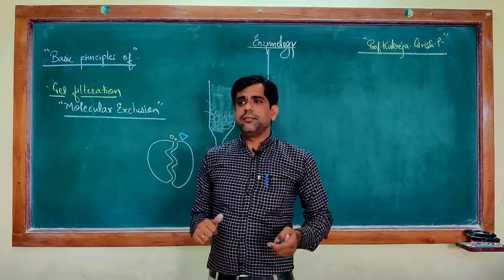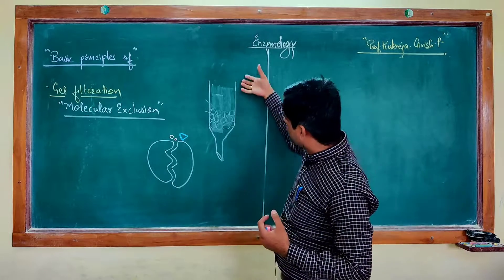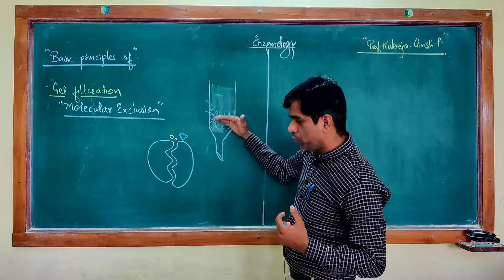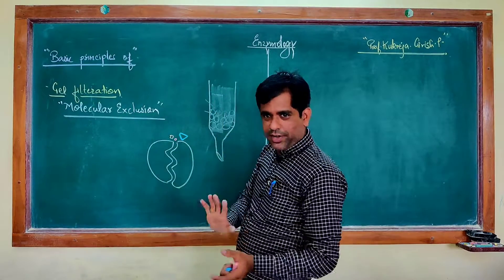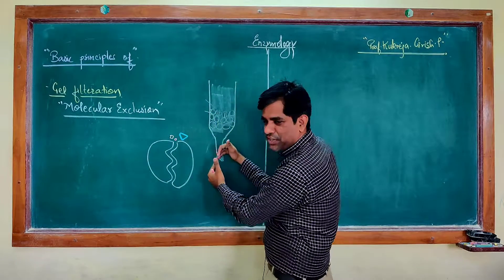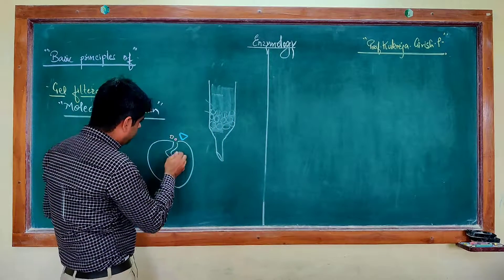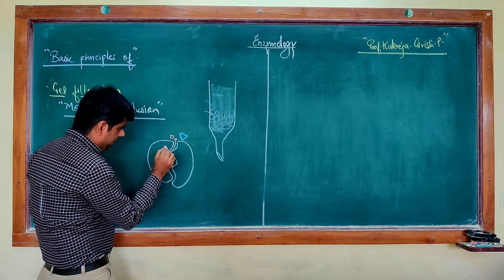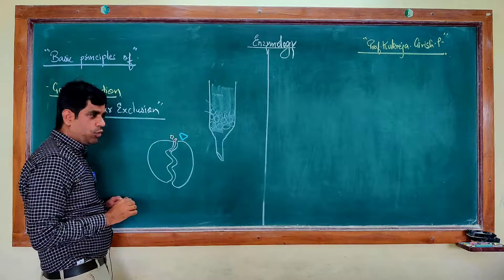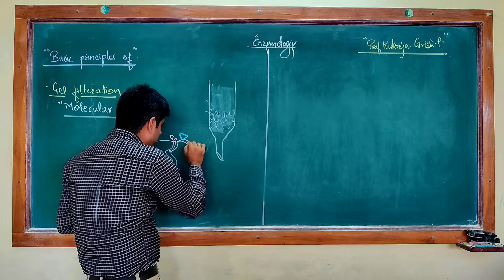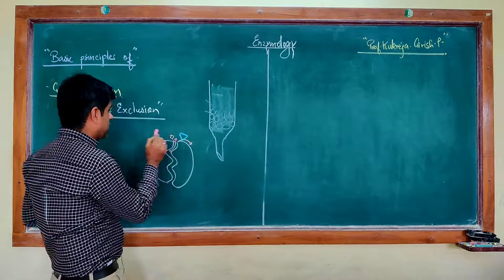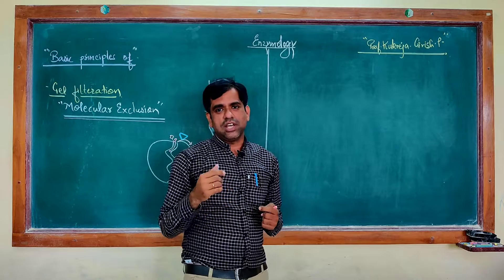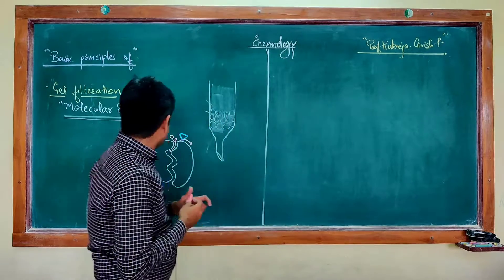Once you have this particular mixture of proteins poured into the column, they will start moving. You have added the buffer and they are moving around, entering into this particular column. This particular bead will allow the passage of only those molecules which are smaller than this particular pore size. The molecule that barely tries to enter, whereas the larger one will be excluded from this particular pore because its size is bigger. Therefore, this chromatography is referred to as molecular exclusion chromatography because it is excluding the molecules which have a size or weight larger than this particular pore.